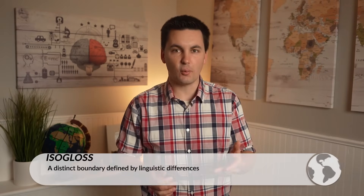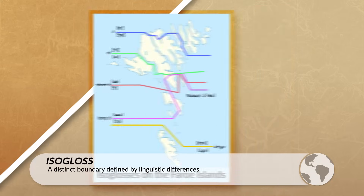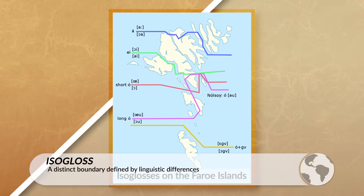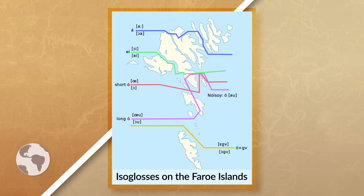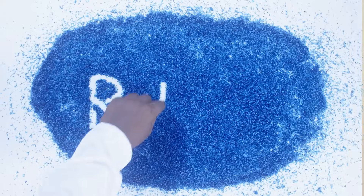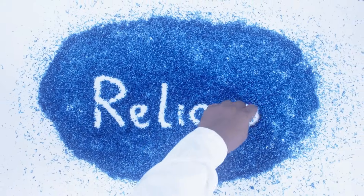Sometimes regional differences are so distinct that we could see the formation of an isogloss, which is a boundary that is based on linguistic differences. Speaking of differences between different regions and locations, we can also look at how religions differ from location to location. When looking at religion, we can see two main categories: universalizing religions and ethnic religions.